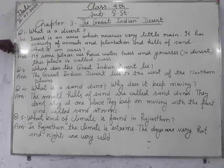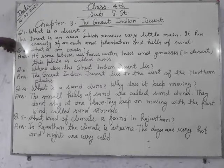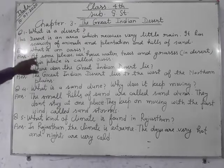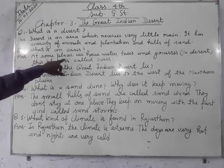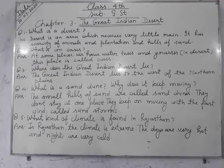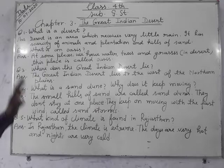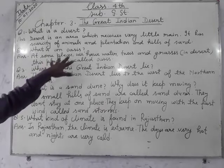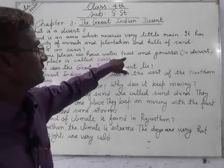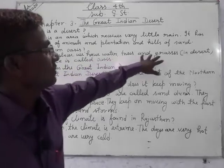Second question: What is an oasis? At some place in a desert, we have water, trees and grass. That area with water, trees and grass is called an oasis.